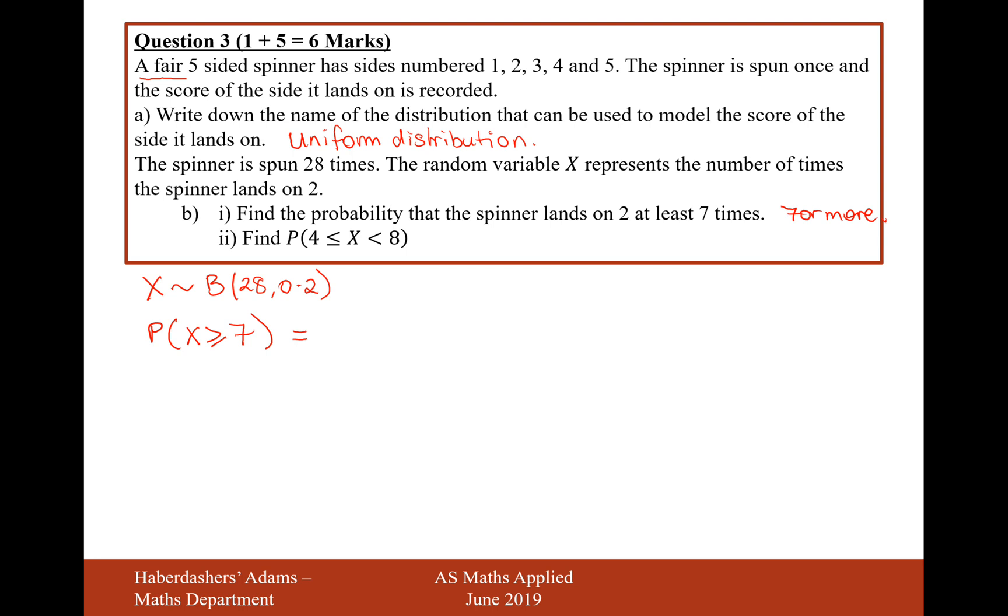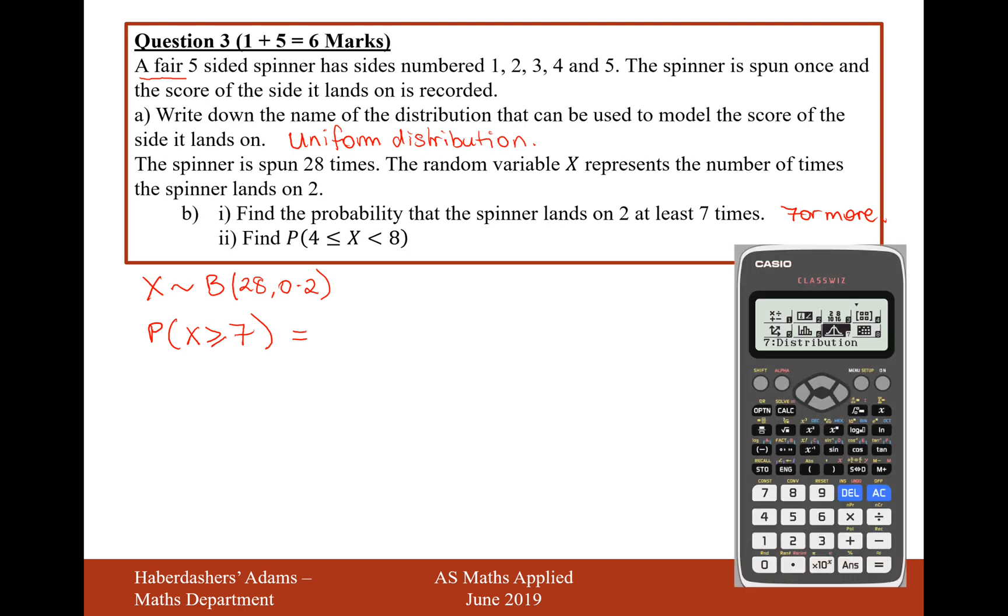Now what we have in our calculator is a binomial CD mode. Let's just go to, on the calculator, go to mode 7, scroll down once and you go to binomial CD. Now what binomial CD calculates for us is the probability for a certain number of successes or fewer than that. But this is the complete reverse question.